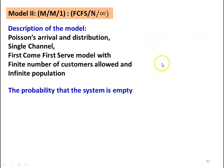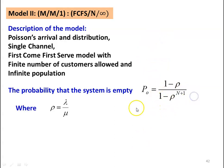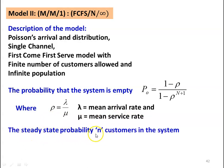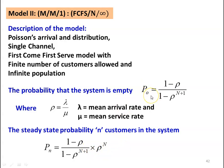The probability that the system is empty: P0 = (1 − ρ) / (1 − ρ^(N+1)), where ρ = λ/μ, λ is the mean arrival rate and μ is the mean service rate. The steady-state probability of N customers in the system: P_N = [(1 − ρ) / (1 − ρ^(N+1))] × ρ^N, where N varies from 0 to the total finite number of customers. Capital N is the number of customers permitted within the system.